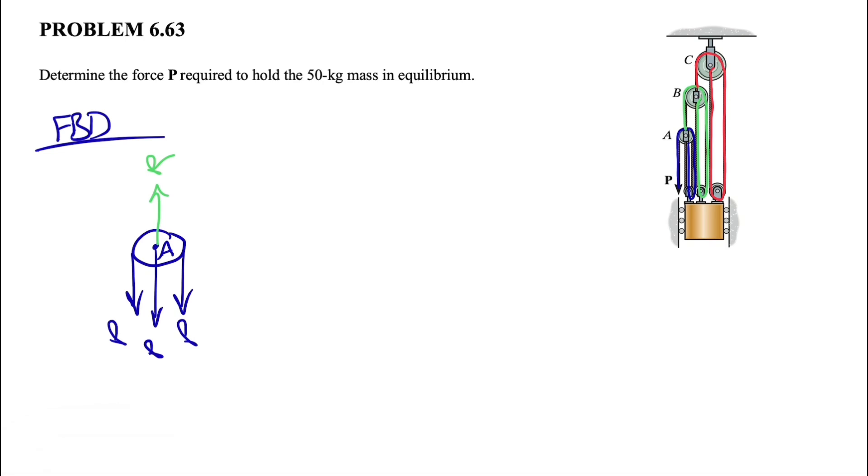We are in equilibrium. We want to do sum of all forces in Y direction. Let's consider our X and Y in this direction. Obviously, there is no force in X direction, so everything is in Y. This will be our positive. If we do this, we'll have R minus 2P equals 0. This would give us R equals to 3P.